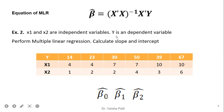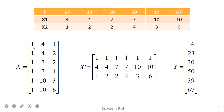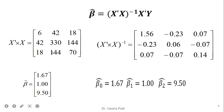Again we follow the same steps. First we set up matrix x, where the first column represents the intercept term. Then we take the transpose x-dash, and y is the dependent variable column matrix of size 6 by 1. We multiply x-dash and x, then take the inverse of x-dash x. After that we multiply this inverse matrix by x-dash y to get the final matrix beta cap, which contains the three parameters beta 0, beta 1, and beta 2.